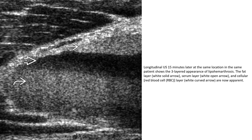This ultrasound image shows the three-layer appearance of lipohemarthrosis: the fat layer, the serum layer, and the cellular layer, all now apparent.